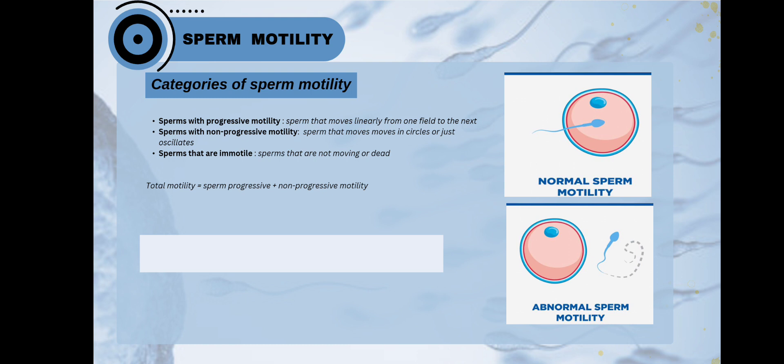In order to determine the total motility of the sperms, we have a formula: sperm motility equals sperm progressive plus non-progressive sperm motility. From this, we determine the total motility of the sperm cells.